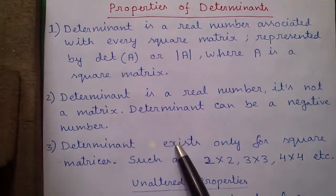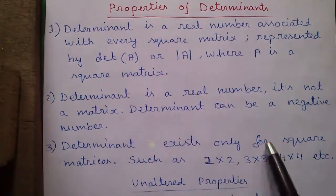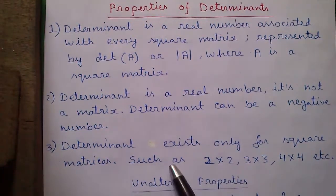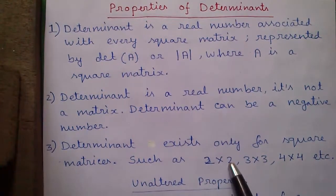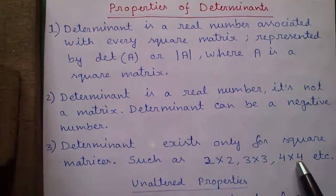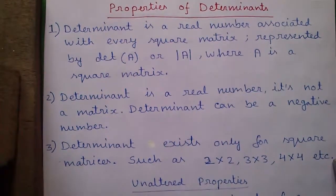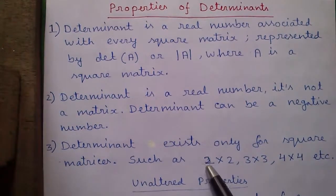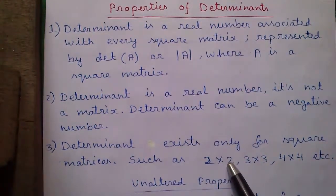Property number 3: determinant exists only for square matrices such as 2x2 or 3x3, 4x4 etc. Square matrix means where number of rows and number of columns are same.